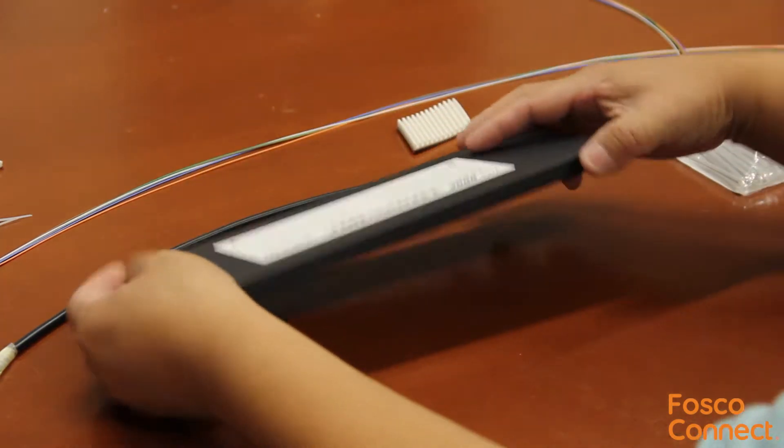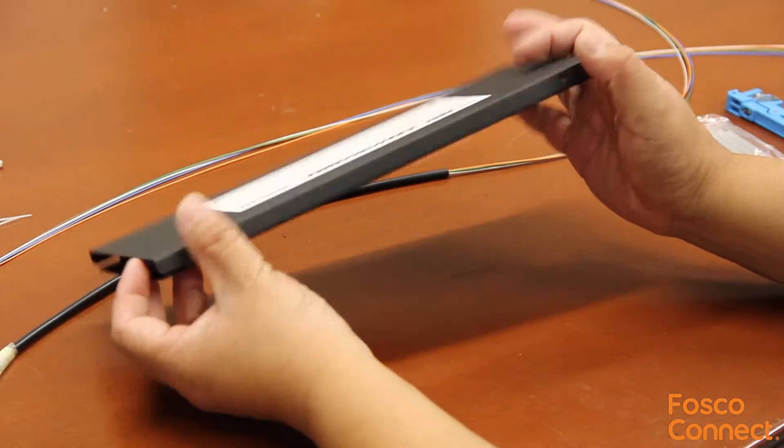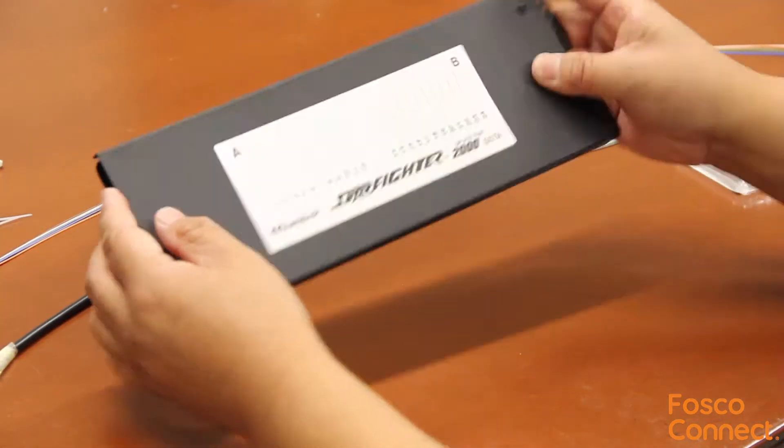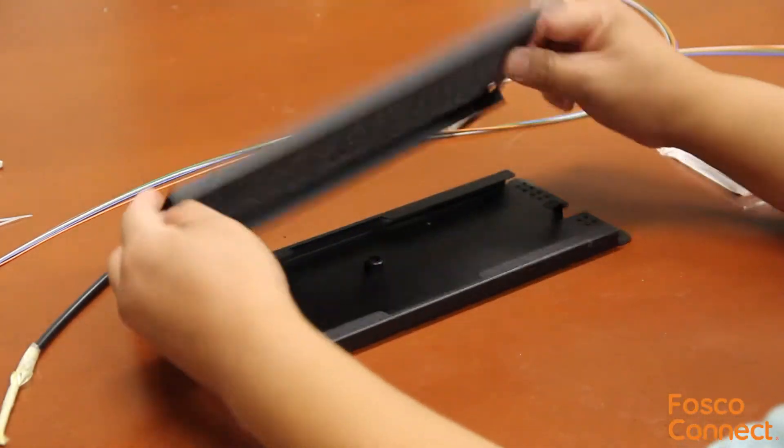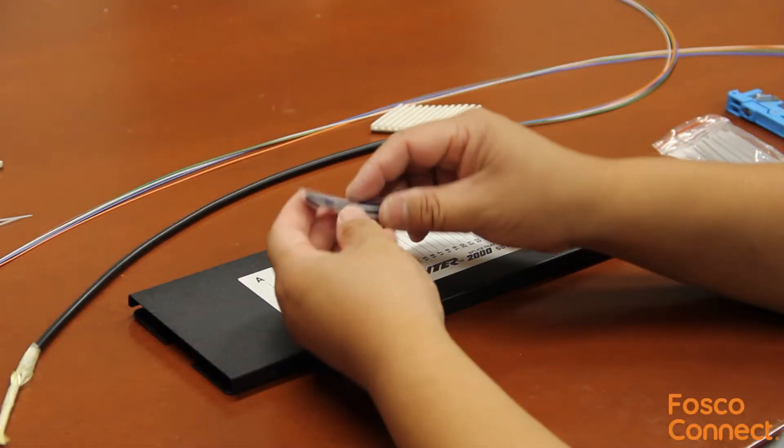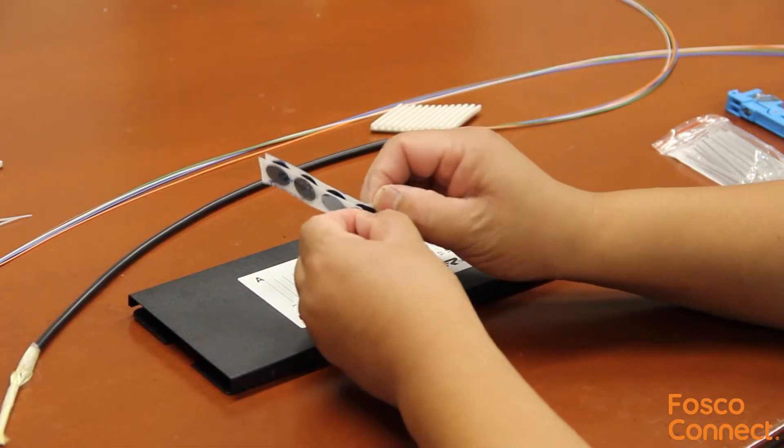You can splice up to 24 fibers in this tray. It has 4 notches to lock the cover to the bottom. It has a foam pad on the cover to protect the fibers. Some velcros are included to stack more fiber trays together.